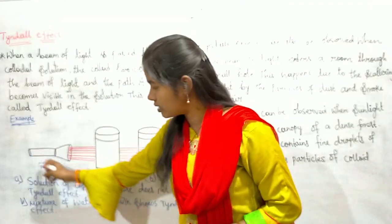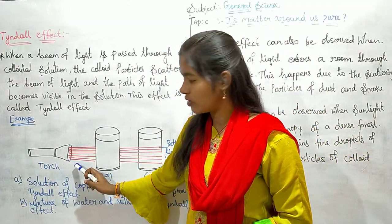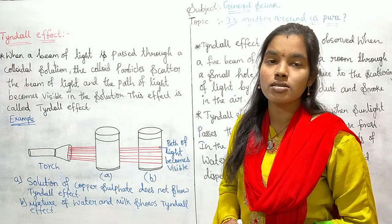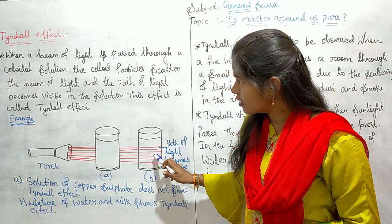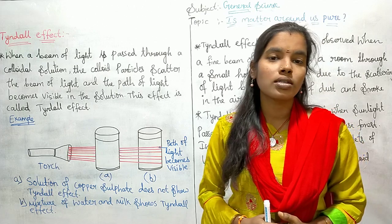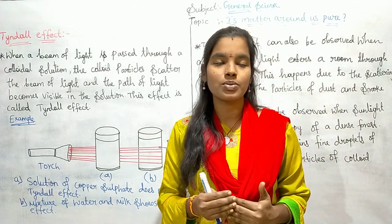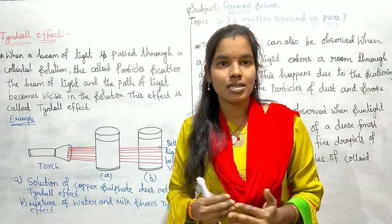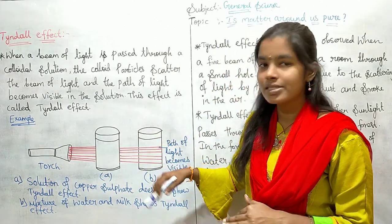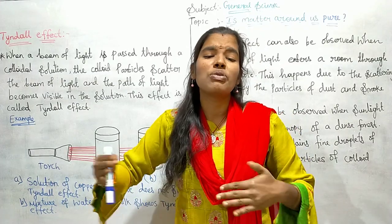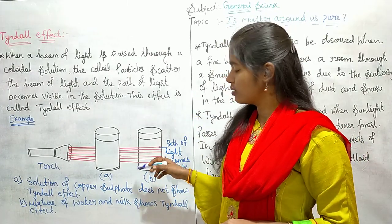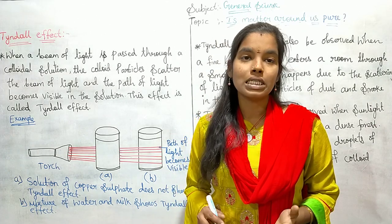You can see here — this is the source of light, and this is the colloidal solution, starch. When a beam of light is passed through a colloidal solution, the colloid particles scatter it. A colloid is a mixture in which particles of one substance are held inside another substance. Scatter means to throw in various random directions. So what happens? The path of light becomes visible. This is nothing but Tyndall effect.